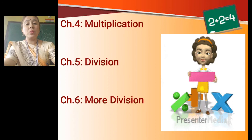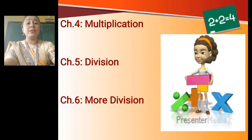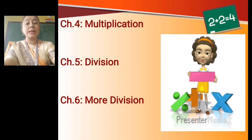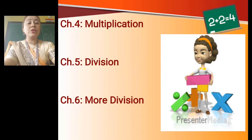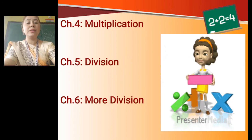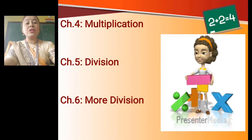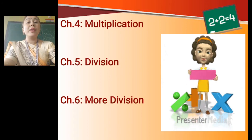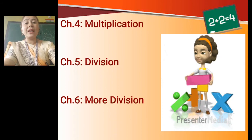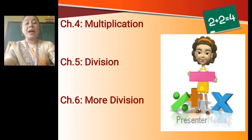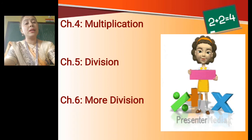Can you tell me what sign the little girl is holding? That is the sign of subtraction. The green color is the sign of division, blue color is multiplication, and the one at the back of the girl is the plus sign — the sign of addition. In Chapter 4 we will do multiplication, and multiplication is also known as repeated addition. Chapter 5 is Division, and in Chapter 6 we will also learn more about division.